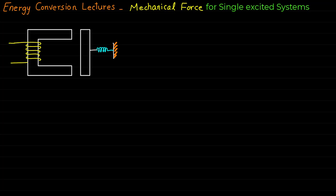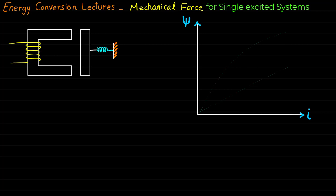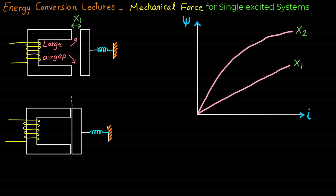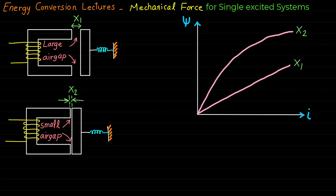The movement of the system can be represented using the psi-i characteristic. The first magnetization curve X1 represents the relay magnetic circuit at the original displacement or position X1, where the air gap is large. The second magnetization curve X2 represents the relay magnetic circuit after movement to the second position X2, where the air gap is smaller and the moving part is stopped. The energy balance equation DWe = DWm + DWf will be used to derive the mechanical energy relationship and then the force relationship.